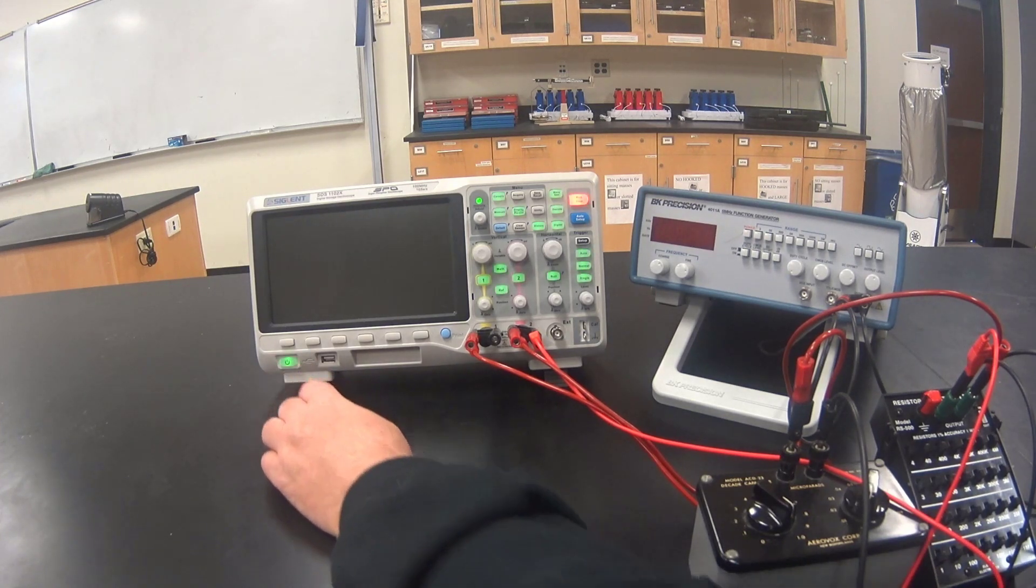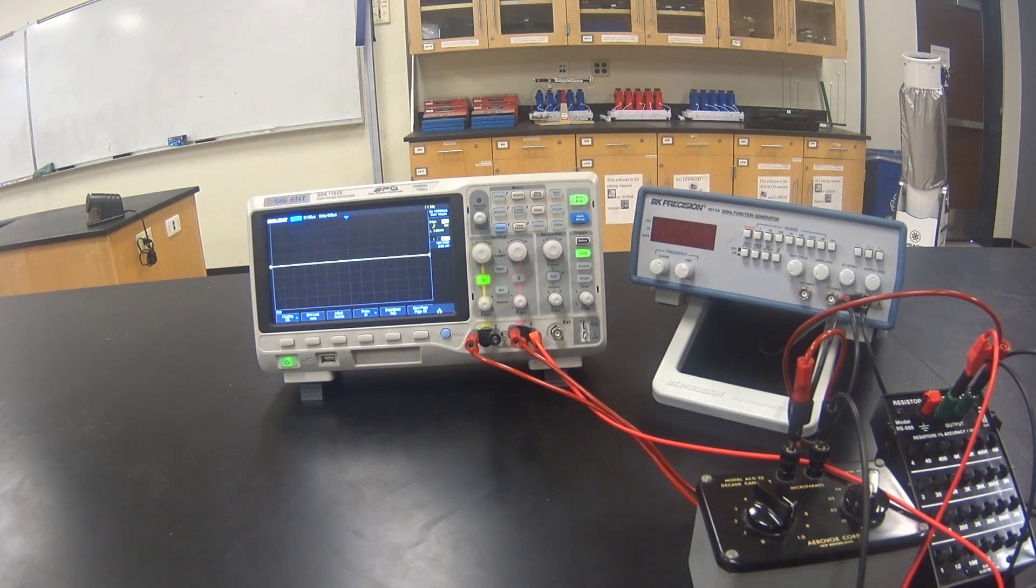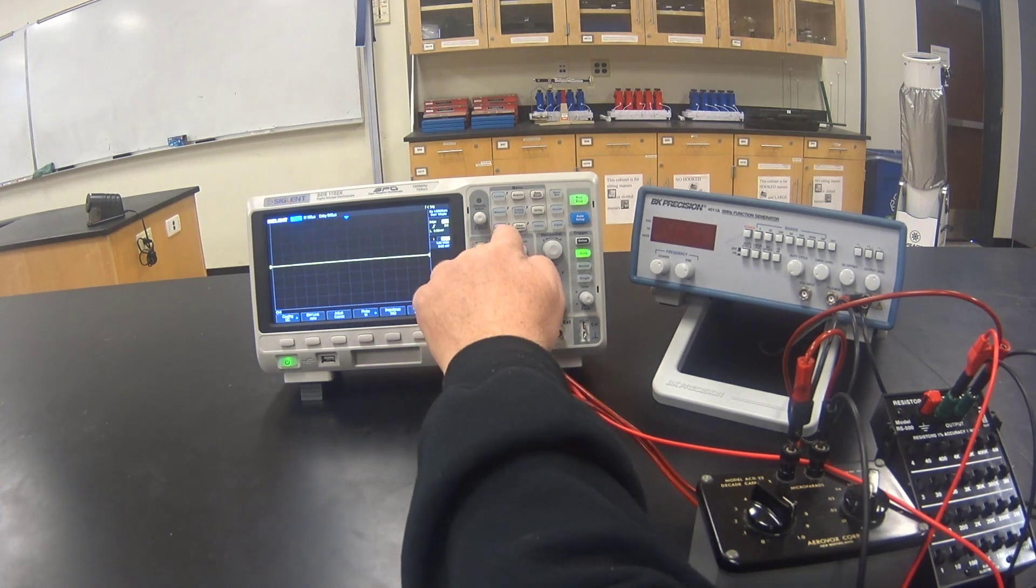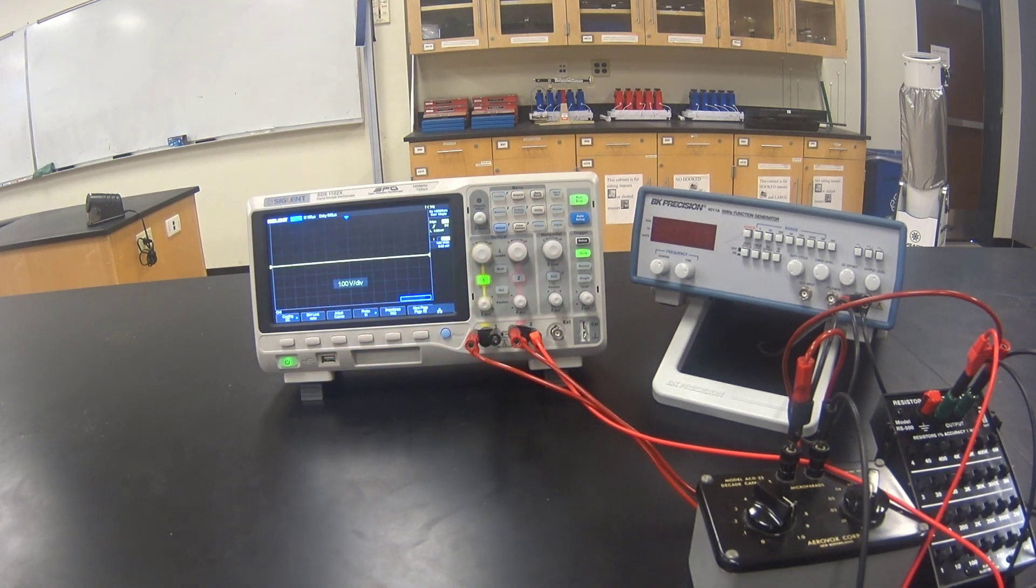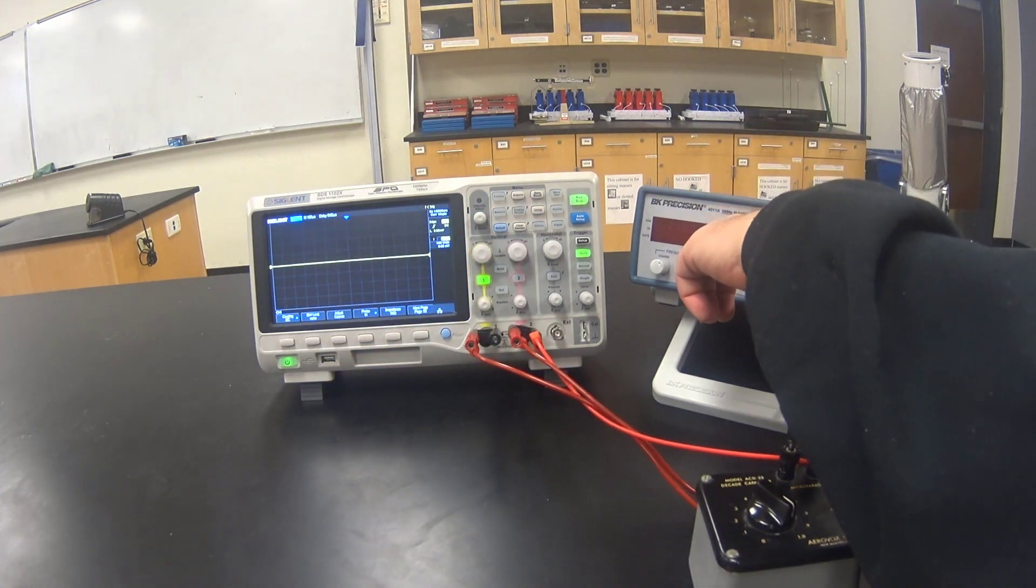Turn on the oscilloscope. Start by pressing the default button, just to remove any settings that might be left over from the previous use of the oscilloscope. Turn on the function generator.